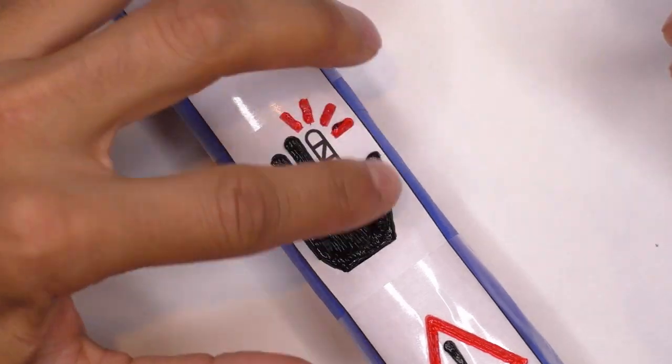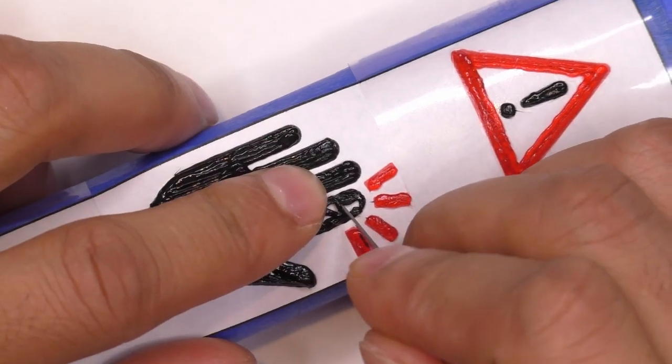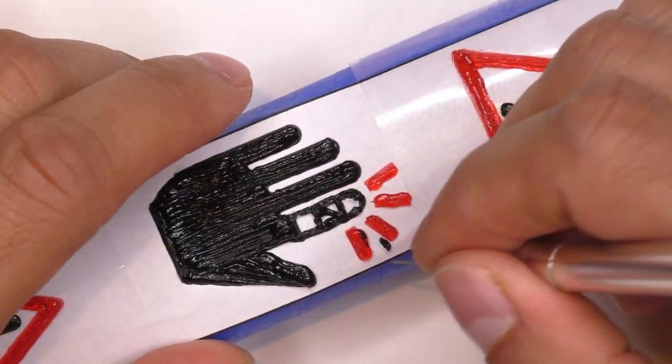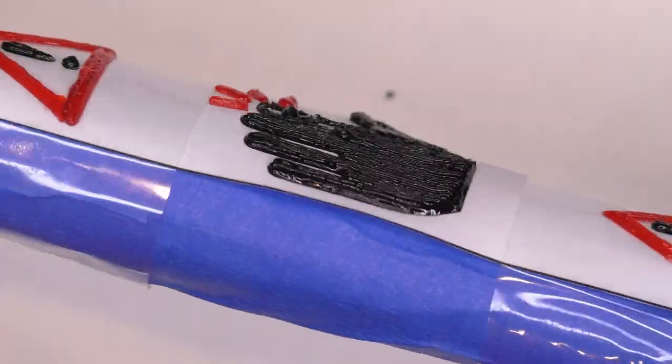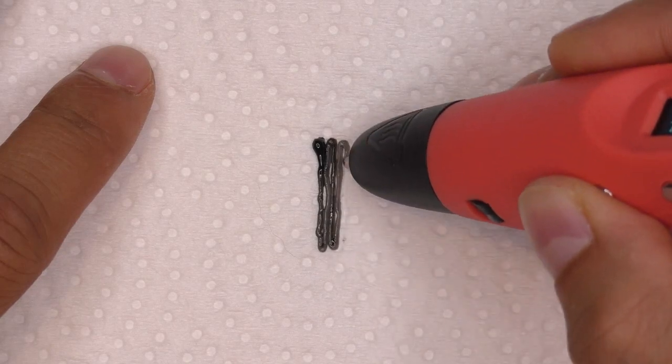I ended up coming back in after the fact with an exacto knife and trimming out some of the parts that I didn't like. These are all the finished details and I'm just trying to show that they have some depth to them.